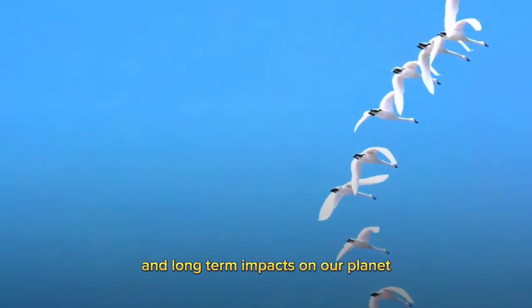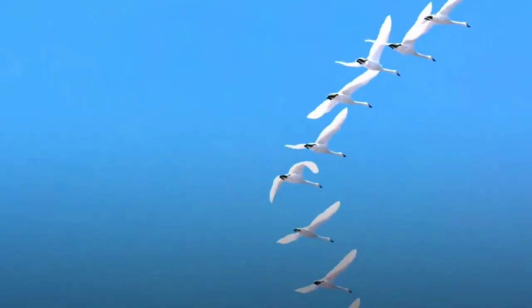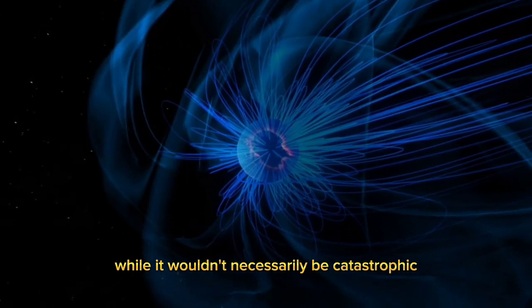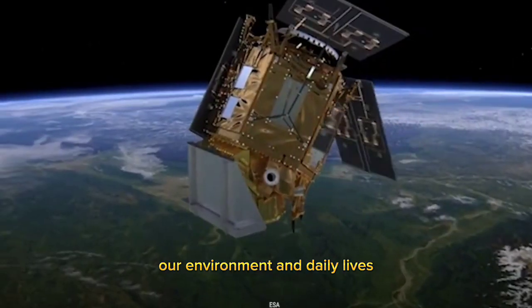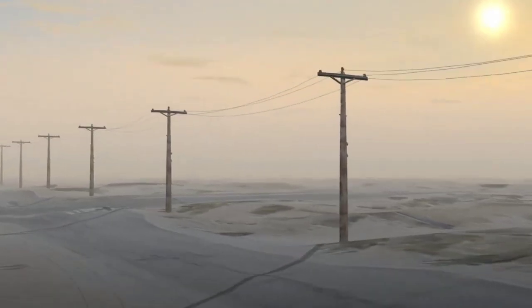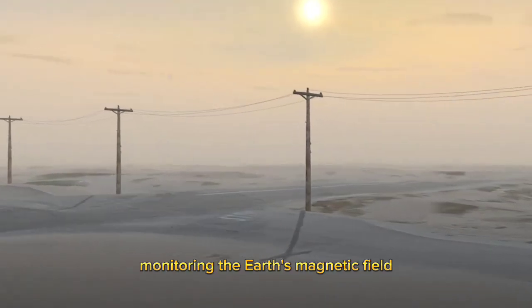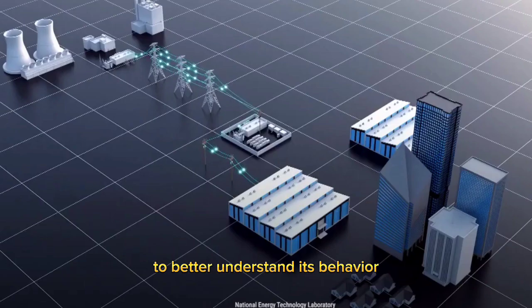A reversal of the Earth's magnetic poles would have both short-term and long-term impacts on our planet. While it wouldn't necessarily be catastrophic, it would certainly bring about significant changes to our environment and daily lives. Scientists are continuously monitoring the Earth's magnetic field to better understand its behavior and predict if and when a reversal might occur.